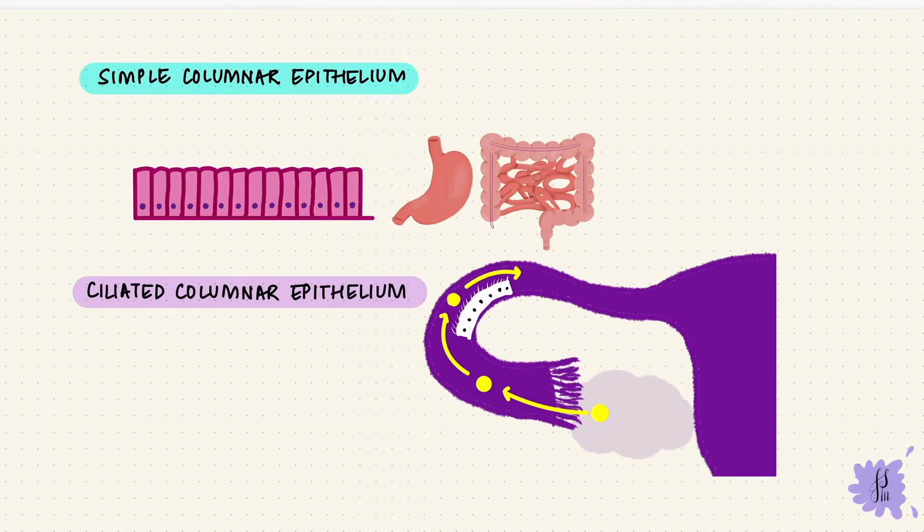Now I said columnar cells, they can perform the function of secretion as well. So in some linings like in the digestive tract, they can be modified cells like goblet cells which secrete mucin.